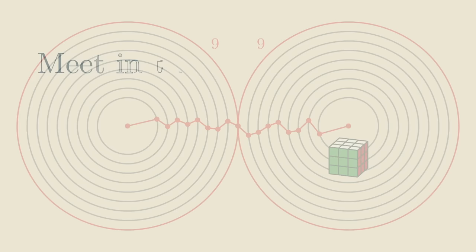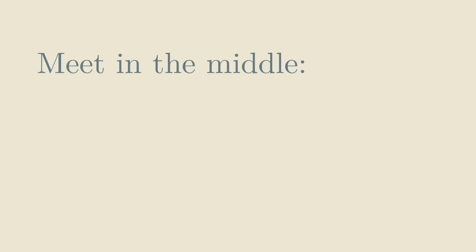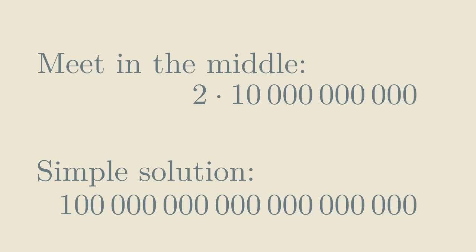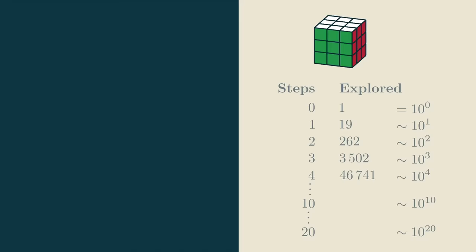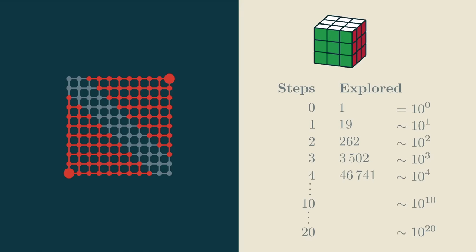This trick is called meet in the middle for obvious reasons, and it's a lot better than what we had before. Since we have to explore up to distance 10 from either side, we see about two times 10 to the 10 configurations, whereas the original search needed to explore up to 10 to the 20. Now we could run this algorithm for other graphs, not just the Rubik's cube graph. But for it to work, it's really crucial that the number of explored nodes grows exponentially in the number of steps. That ensures that if we walk half the distance, we only see a tiny fraction of the nodes. If we were to run meet in the middle in the Manhattan graph, it wouldn't help us at all, because it might happen that we end up exploring all the nodes anyways.